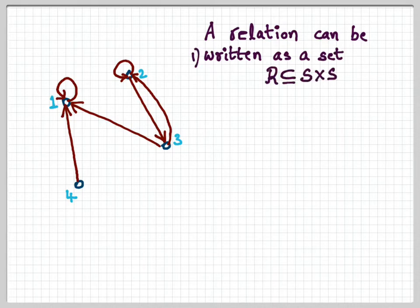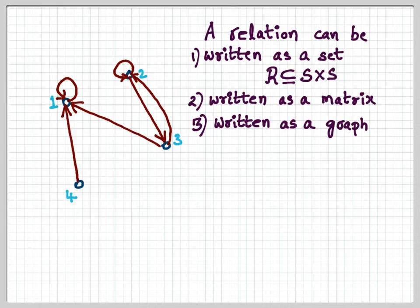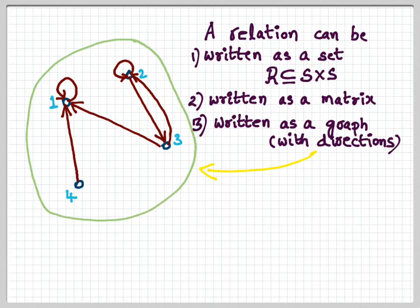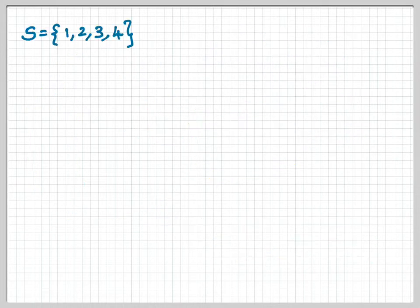A relation R, which is a subset of S × S, is the set representation. We also saw how it can be represented as a matrix — the matrix representation — and we just saw how it can be represented as a graph. These three are different representations of the same concept: relations. Please note these graphs are directed — you put an arrow at the end of each edge. Such a graph is called a directed graph.